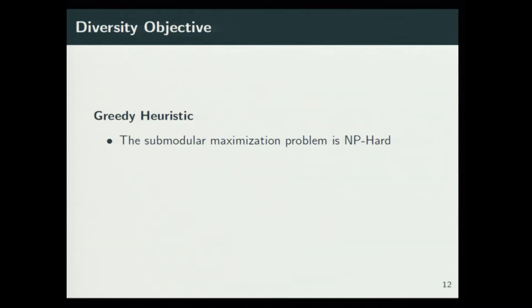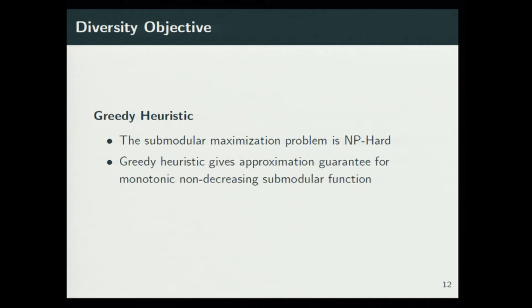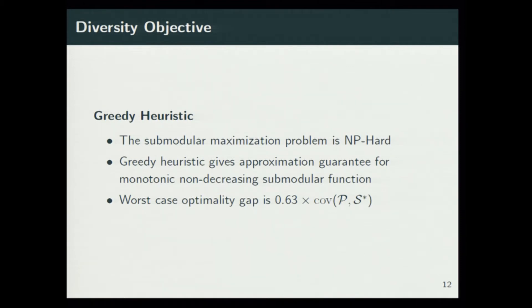How do we solve this? Because submodular maximization is an NP-hard problem. Luckily, the greedy heuristic, which is very simple, says that at each iteration we add the item which gives the highest coverage value. The greedy heuristic gives a very good approximation guarantee for monotonic non-decreasing submodular functions. In fact, we get worst-case optimality — 63% of the optimal result.